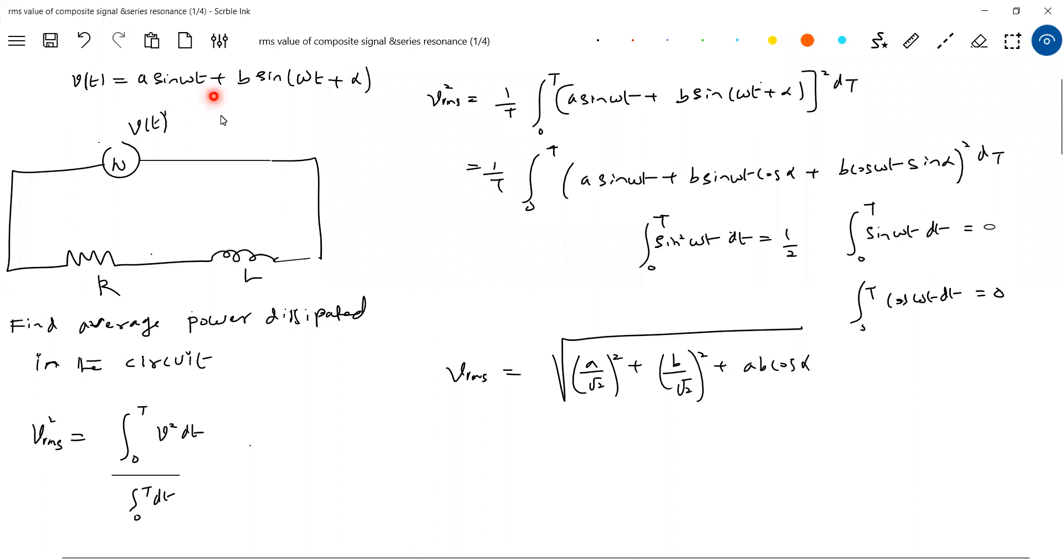Like that, if I bring another component, plus C sin omega t with some phase angle, you can't, you have to work out. This phase, what happened? I think we have discussed the problem without this phase angle. Can you remember? Without this, it was there, that one. The question what we discussed is, it was without this. Now, if the phase angle comes, the formula will end up like this.